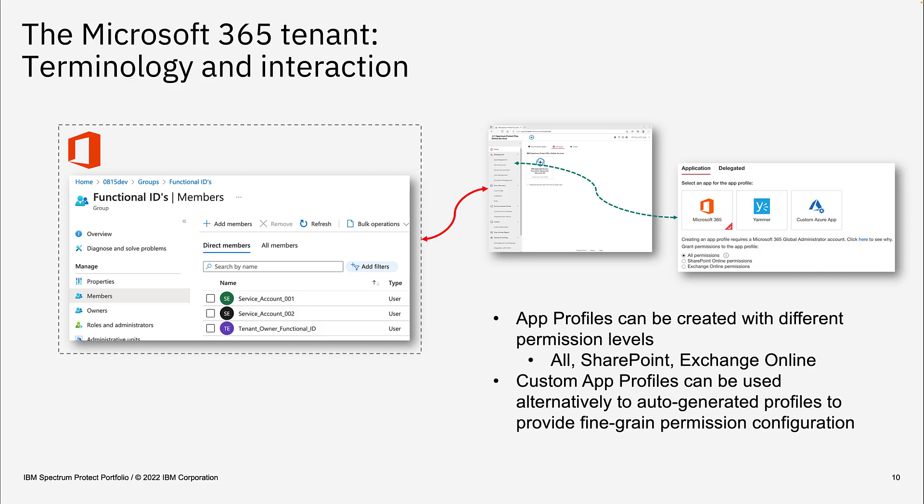They can grant all permissions, only SharePoint permissions, or only Exchange Online permissions — as shown in the screenshot on the right. Depending on what they enable, the permissions will be set automatically, and they just have to grant access to the SPP Online Service to enable backup and recovery for the Microsoft tenant. Alternatively, they can generate their own sets of user and access rights for the different data types in the Microsoft tenant.